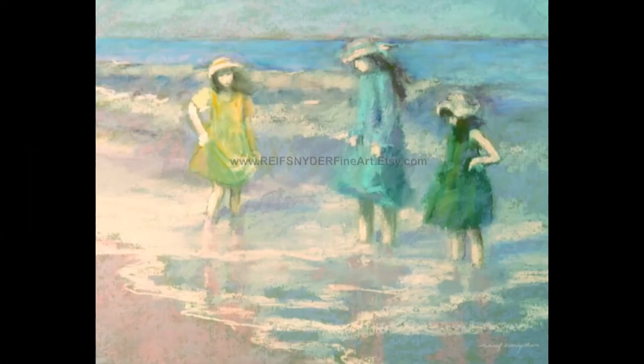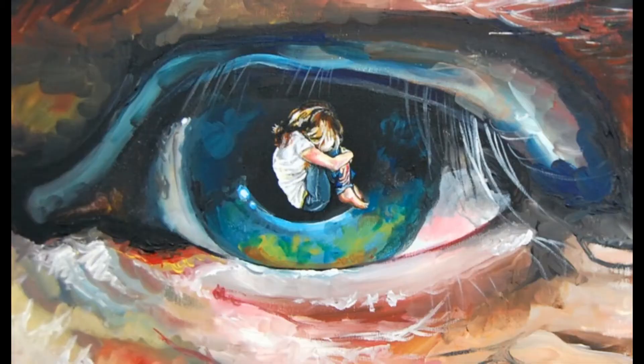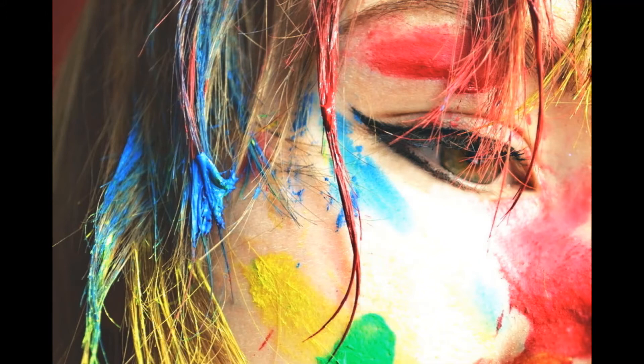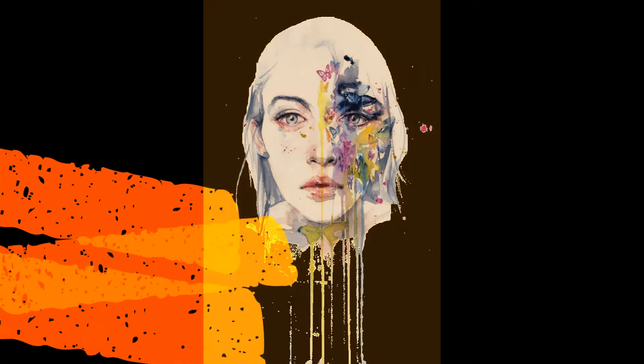Both — that is the loss of childhood or the beach holiday during childhood for the mother, and the mother being dead — the bigger loss is for the poet. Now let's look at the word 'wry', which is a combination of several emotions like disappointment, sadness, overwhelming grief, annoyance, displeasure, dried-up emotions, and so on.